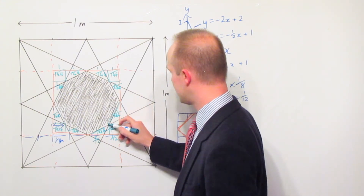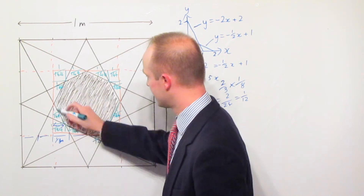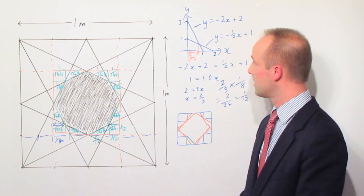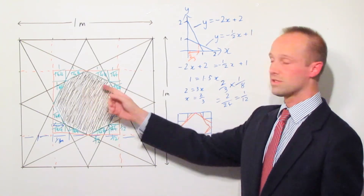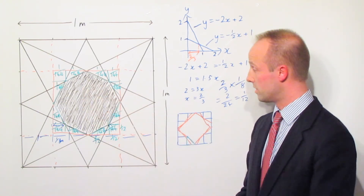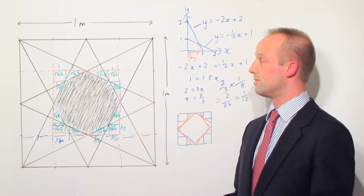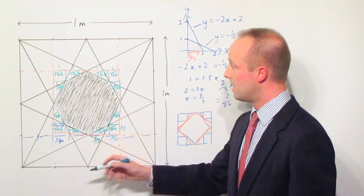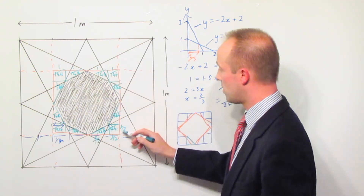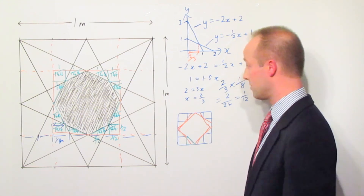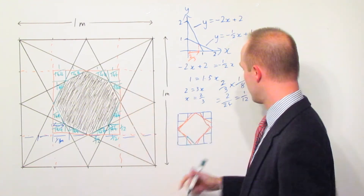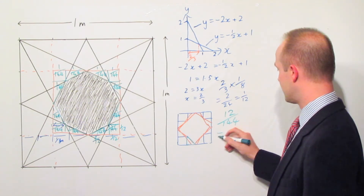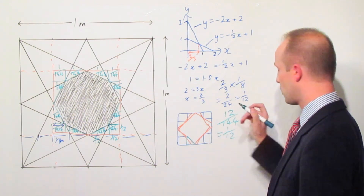So all of these sections — the area of each one of them is one over 144. And the area of this total inner square section is one quarter, as we've already worked out. We've got 12 pieces each of one over 144, giving us twelve one-hundred-and-forty-fourths, which simplifies down to one twelfth.